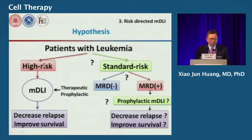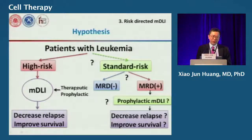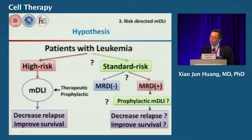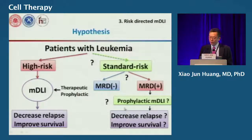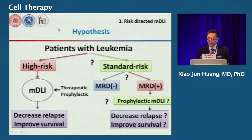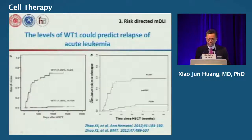Patients who receive transplantation in complete remission also benefit. Our strategy is MRD monitoring: MRD-negative patients receive routine transplantation protocol management, while MRD-positive patients receive preemptive modified donor lymphocyte infusion. We hope that by this preemptive DLI, we can decrease relapse and improve disease-free survival. We use WT1 and flow cytometry for MRD monitoring.